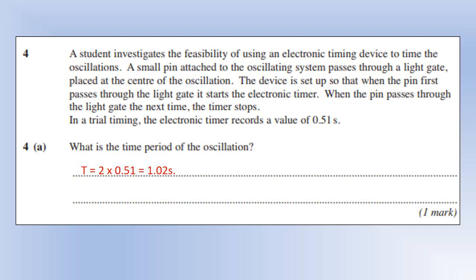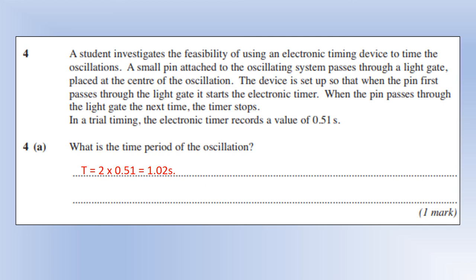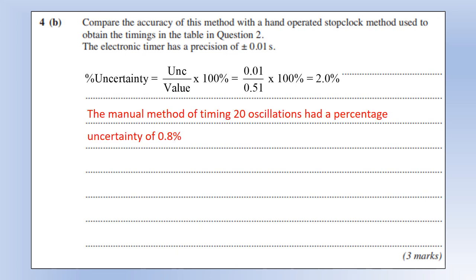Compare the accuracy of this method with the hand-operated stop clock method used in question 2. If the timer has a precision of 0.01 seconds. So the timer is a digital instrument, so its uncertainty is equal to the precision if we've only got one reading. The measurement was 0.51, therefore its percentage uncertainty is 2%. If we look back for question 2, we had a percentage uncertainty in the timing of 0.8%, or maybe it was 0.9% actually. But either way, it's much less.